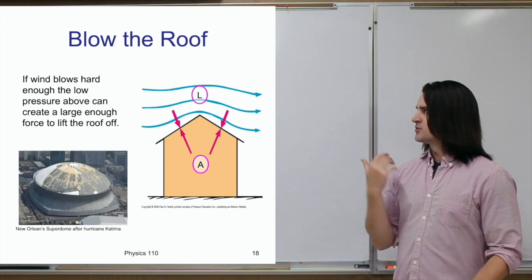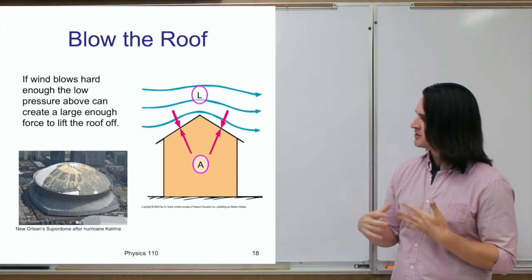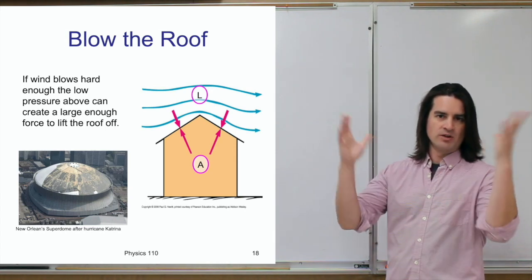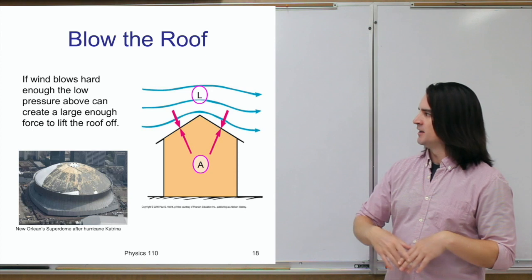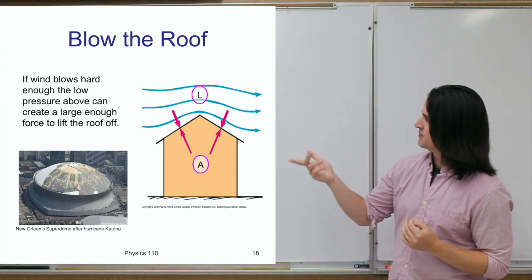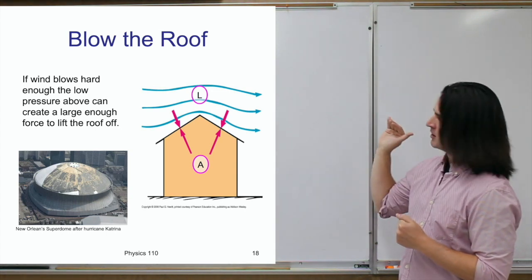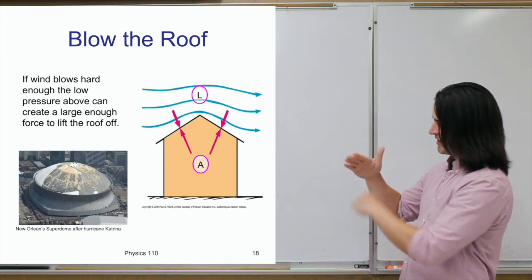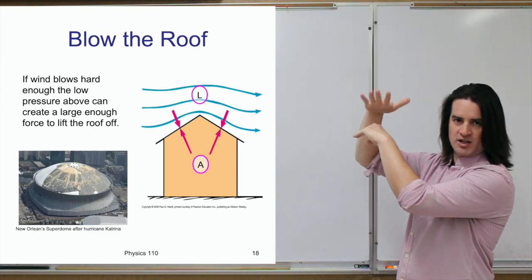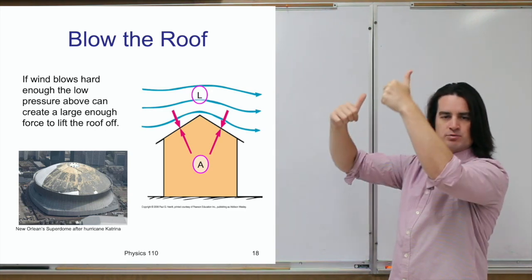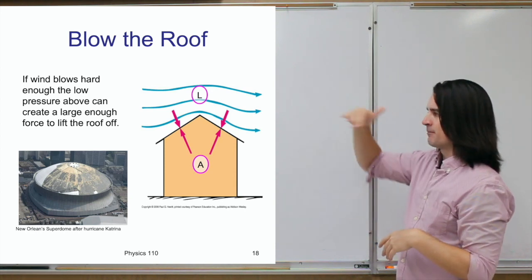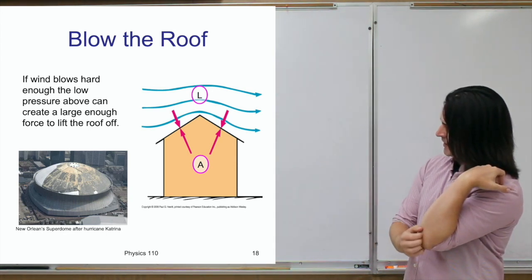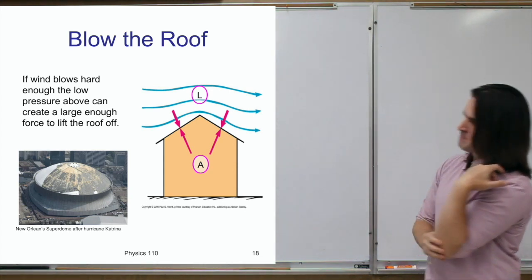Another consequence of moving air having lower pressure is that the roofs of buildings can be blown off in very high winds. With very high winds moving along the top of a roof, there's much lower pressure above the roof than inside the house, where air is still at atmospheric pressure. That means there's a much larger pressure pushing from below than from above, creating a net upward force on the roof. If wind gets high enough, that net force can lift the roof right off — as happened to parts of the Superdome.